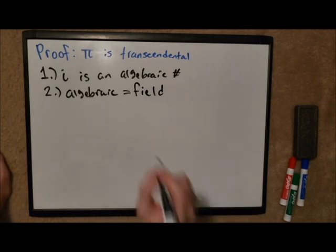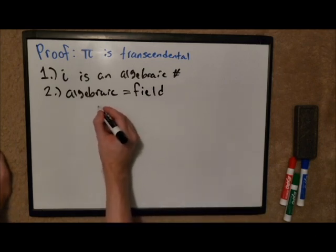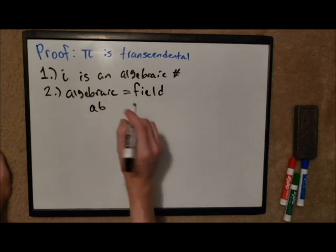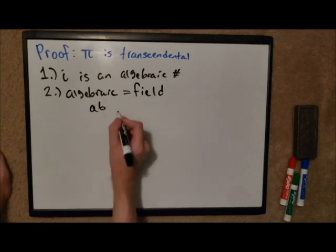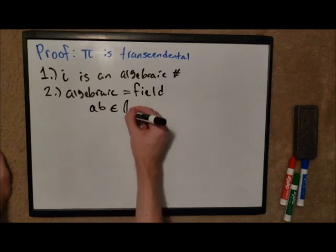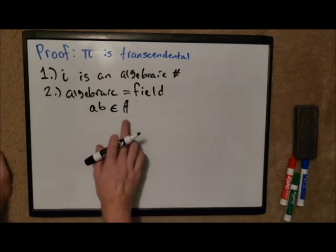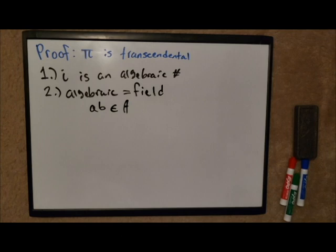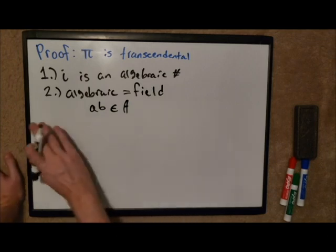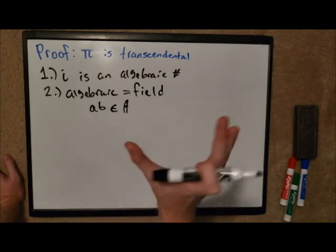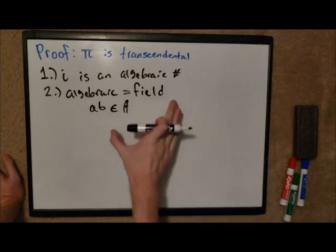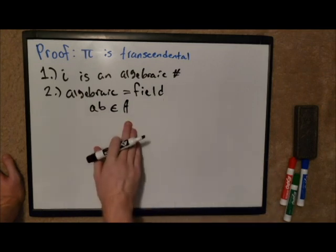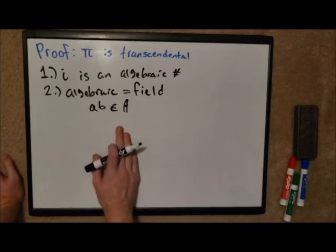Specifically what we want to know is that if you take two numbers, two algebraic numbers a and b, and multiply them together, then that result will also be algebraic. Here A is the set of algebraic numbers. Really sort of unnecessarily complicated language, all we need to know is you multiply two algebraic numbers, the result is also algebraic.